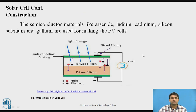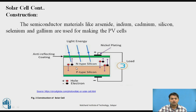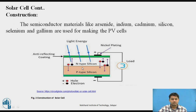Construction of the solar cell again uses semiconductor materials. Two different types of materials are used: p-type and n-type. In the p-type, majority carriers are holes; in the n-type, majority carriers are electrons. When light falls on this structure, electron-hole pairs are generated. Commonly used materials are silicon, and gallium arsenide is also now used in solar cells.